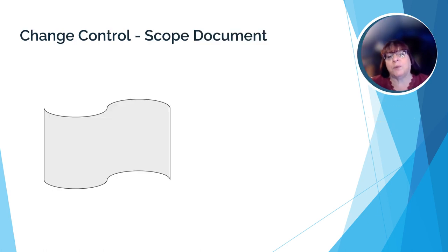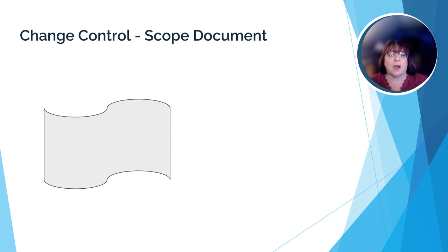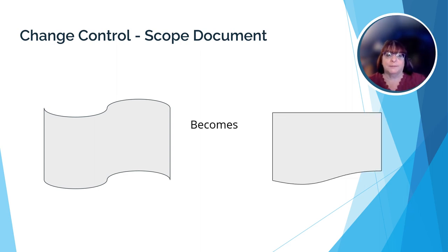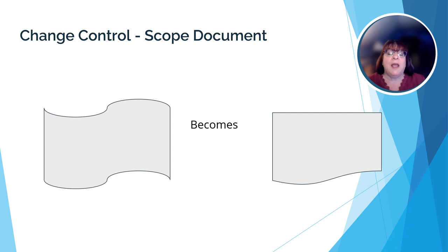Remember from Units 3 and 4 where we discussed project documents and project planning? We talked a lot about the project scope — the scope document details exactly what the project will accomplish and what its deliverables will be. We said we might revisit the scope document once the project is underway as things come up that call for a change to the original scope. Well, here we are. We're executing the project and as we get into the actual tasks involved, it's quite likely that some things may need to change.